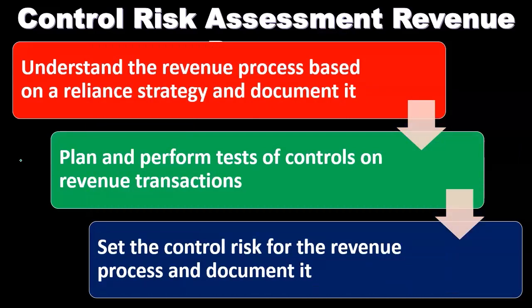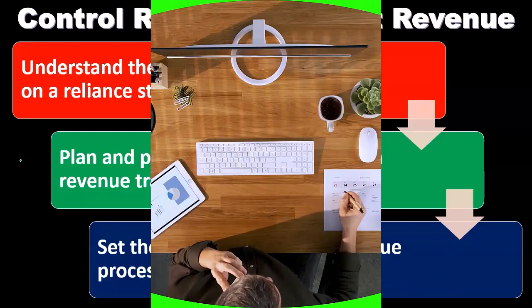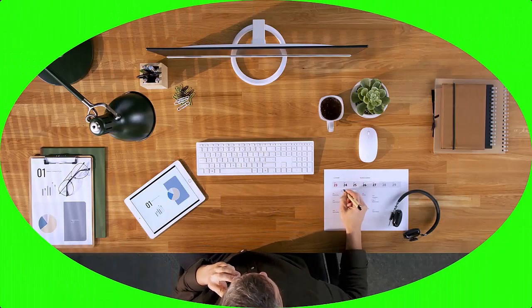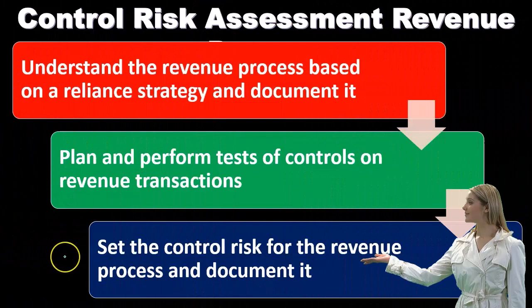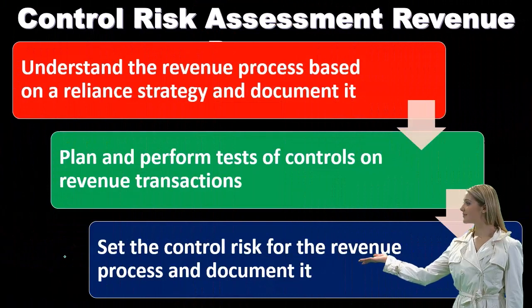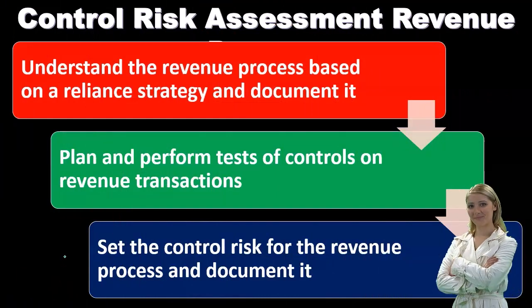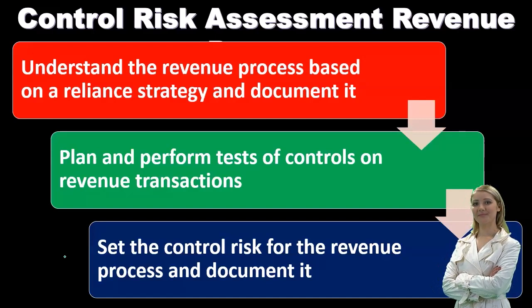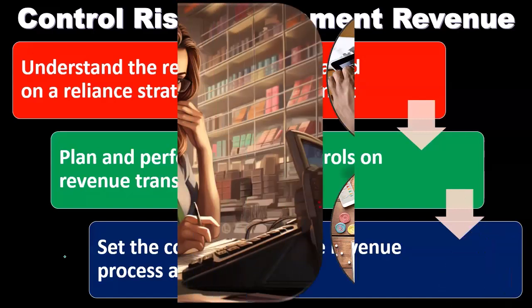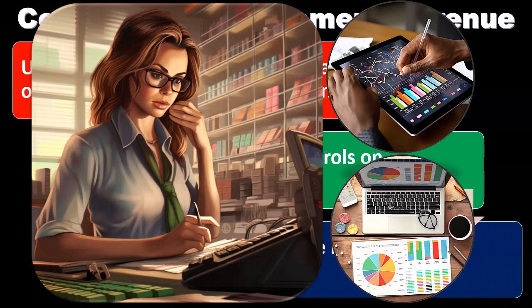After the test of controls related to the revenue process, we set what the control risk will be. Control risk relates to the ability of controls to detect a material misstatement. We then consider the inherent risk and determine how much substantive testing we will need to do.